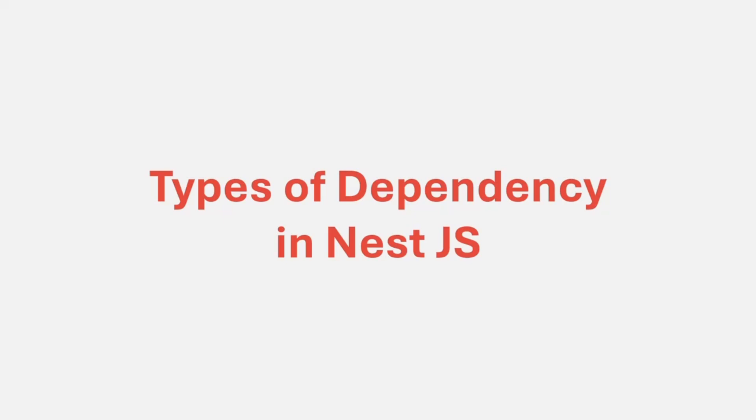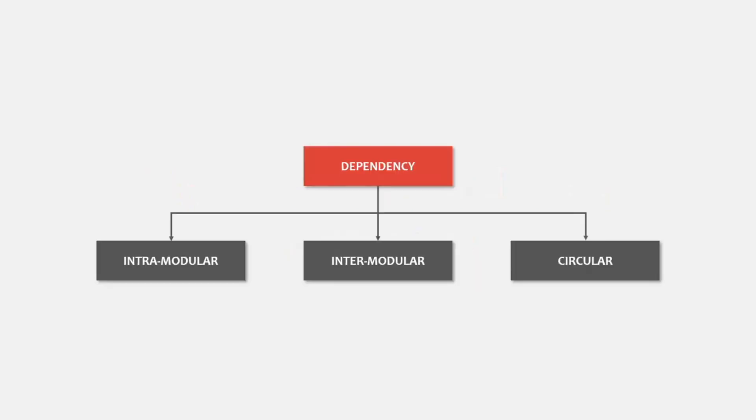Before we proceed further and learn more about dependency injection in NestJS, let's first understand what are the different types of dependencies we have in NestJS. In NestJS, we have three types of dependencies: intramodular dependency, intermodular dependency, and circular dependency. Let's try to understand each of these dependencies one by one.